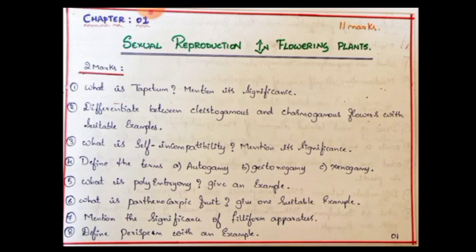Next: What is polyembryony? Give an example. Polyembryony — you need the definition and a suitable example. Then: What is parthenocarpic fruit? Parthenocarpic fruit is a false fruit. You can use the same example here as well.